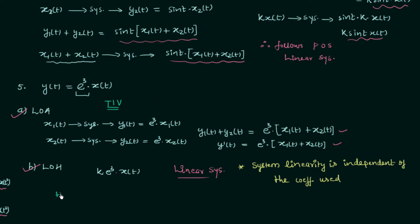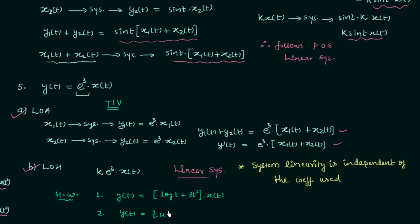Now we will move to the homework problems. In the first homework problem, y(t) = [log(t) + 3t²] · x(t), and in the second problem y(t) = t · u(t) · x(t). Comment about the linearity of the two systems and once you have your answer, post it in the comment section.